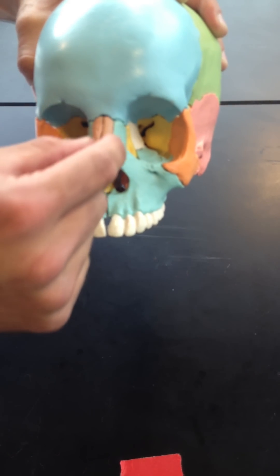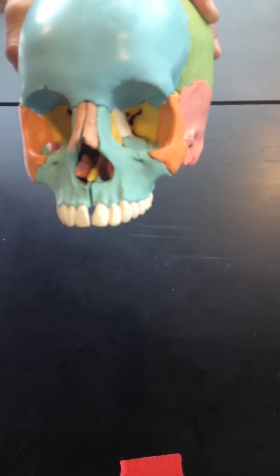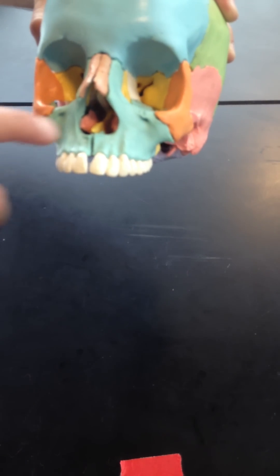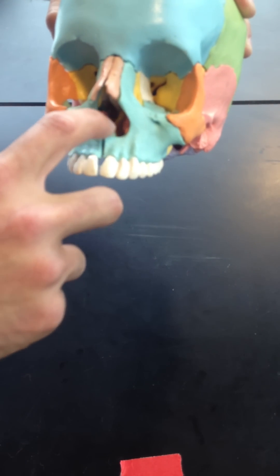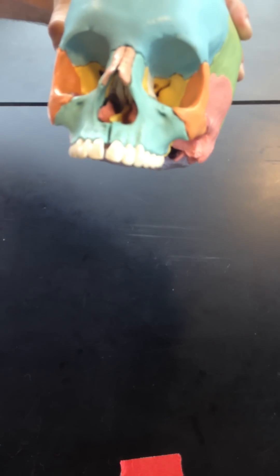Now, just medial to the maxillary bone, we have our two nasal bones, seen in brown here. Next, we have the vomer, which is this yellow bone. The vomer actually meets up with the perpendicular plate of the ethmoid bone.